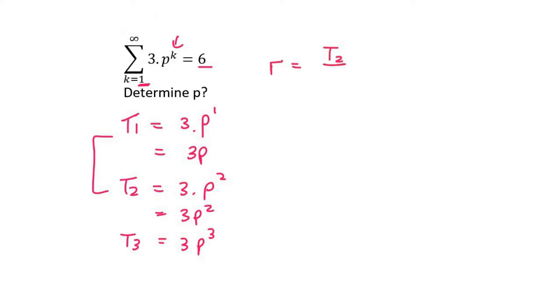Now r can be term 2 divided by term 1, which is going to be 3p squared over 3p, which equals p. You could also use term 3 divided by term 2 if you wanted to. That would be 3p cubed over 3p squared, which is also p. So we know what r is, it's p.